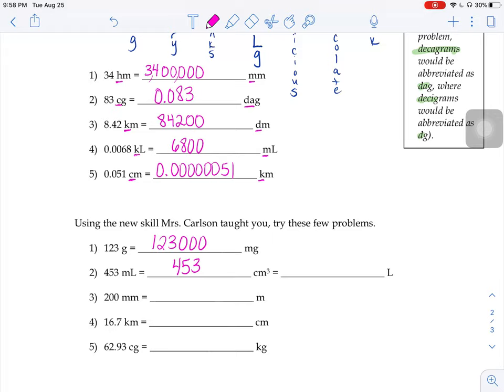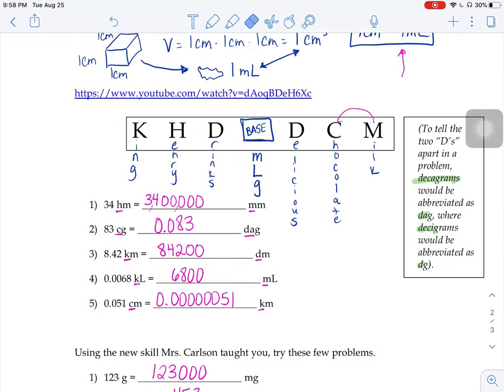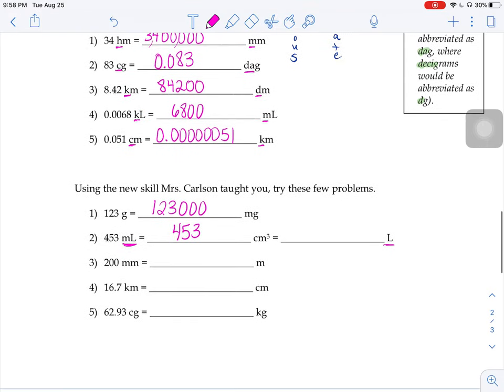The place that you would move your decimal would be this guy when you're going from milliliters to just plain old liters with no prefix. We would have to go from milli to just plain old liters. So one, two, three with no prefix, just the base unit. Three to the left. So three to the left.